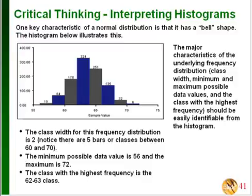You should be able to figure out class width and the minimum and maximum possible data values from a histogram. In this example, from 60 to 70 there are five classes, so the whole distance of 10 divided by 5 gives a class width of 2. Going back from 60, the classes start at 58, then 56, so the minimum possible data value is 56. Going forward from 70, the next class starts at 72, so the maximum possible data value is 72. The class with the highest frequency is 324, which falls in the class from 62 to 63.